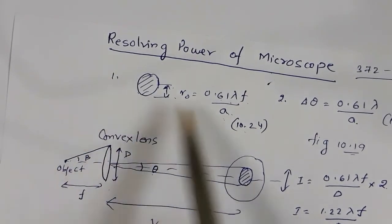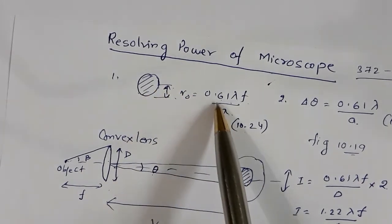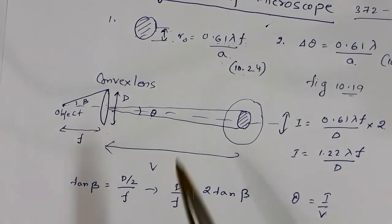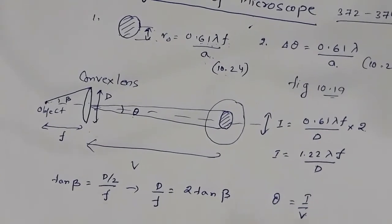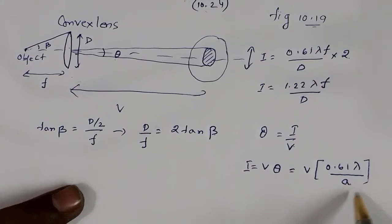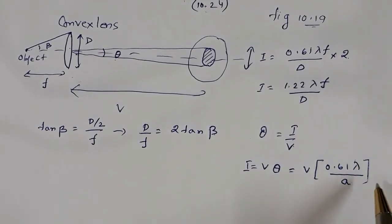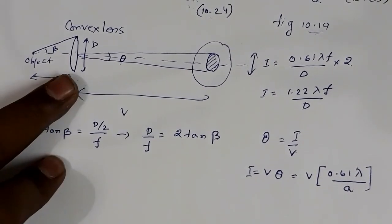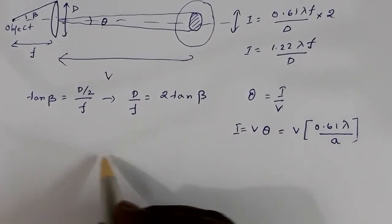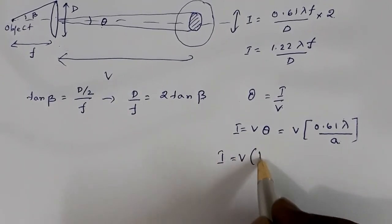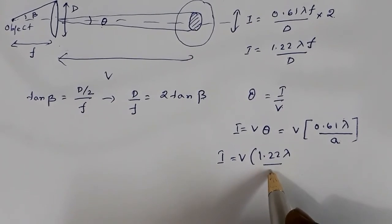When 2A was the aperture, the radius of the central bright spot was 0.61λ/A. In this case the aperture size is D. If I multiply numerator and denominator by 2, then 2A becomes D. So the image size becomes I = V · 1.22λ/D.